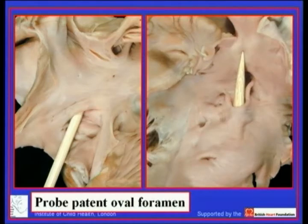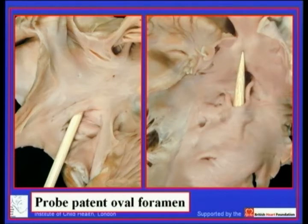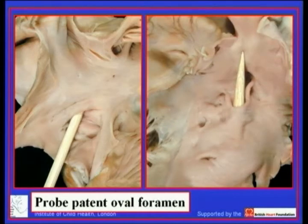Here you see the so-called horns of the flap valve and the probe is passed between the rim and the floor of the oval foramen. Now many people in the migraine literature and in the adult literature talk about different sizes of the probe patent oval foramen. To me that is a little artificial because the oval foramen is simply a closed door. As long as the flap valve overlaps the foramen and left atrial pressure is higher than right, the door will remain closed. So if anything, we should be talking about the length of the space between the edge of the flap valve and the enfolded rim, rather than trying to give size to this entity which only exists when you pass a probe through it.